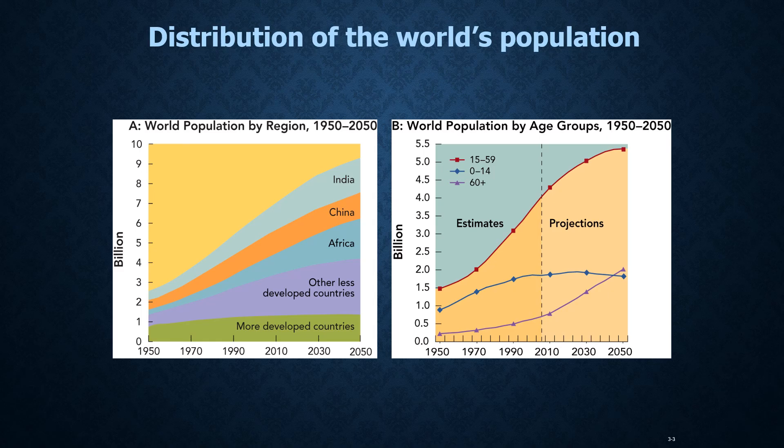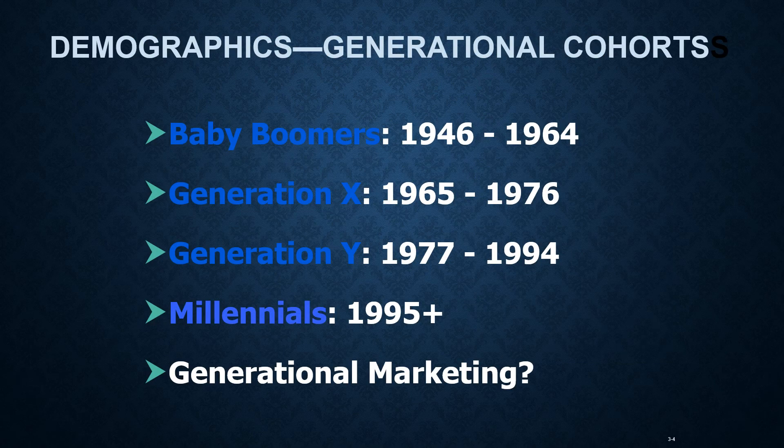Second, you'll notice that the average world population age will also be increasing over the next 15 to 20 years. In terms of age, if we take a look at the U.S. population, we tend to break the U.S. population down into generational or age cohorts.